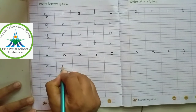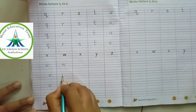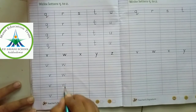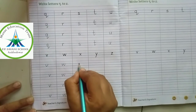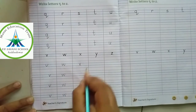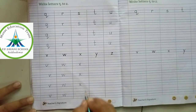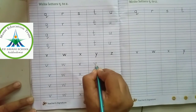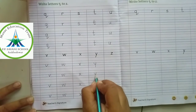W between two blue lines. W, W, W. X again two blue lines. X, X, X. Y, Y.